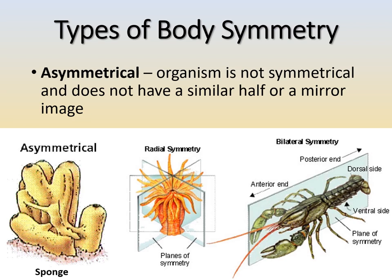The third type is asymmetrical, where the organism is not symmetrical at all — no similar half, no similar pieces, no mirror image. The picture shown illustrates all three types with examples. For asymmetrical, a sponge is the example: you can't split it in half for mirror images and you can't cut it into similar pieces either. Most animals fall into one of these three categories of body symmetry.